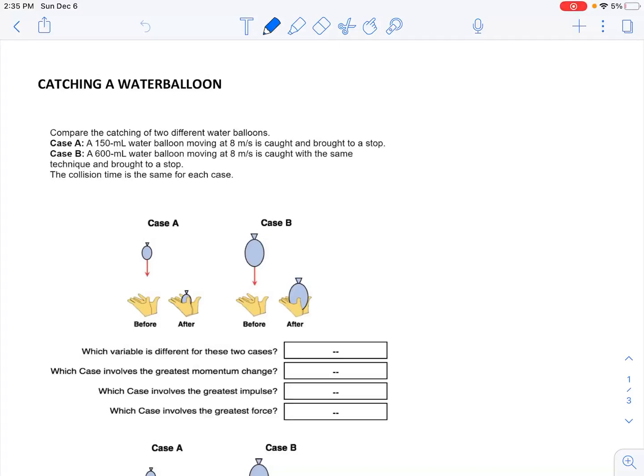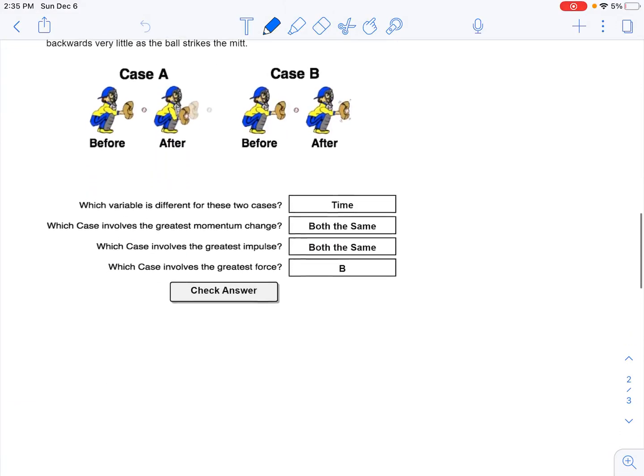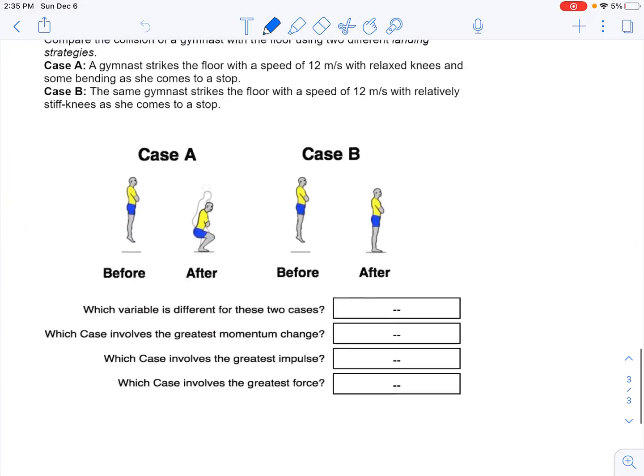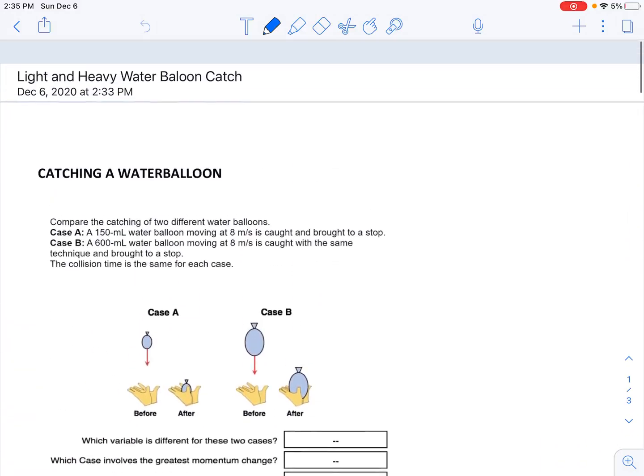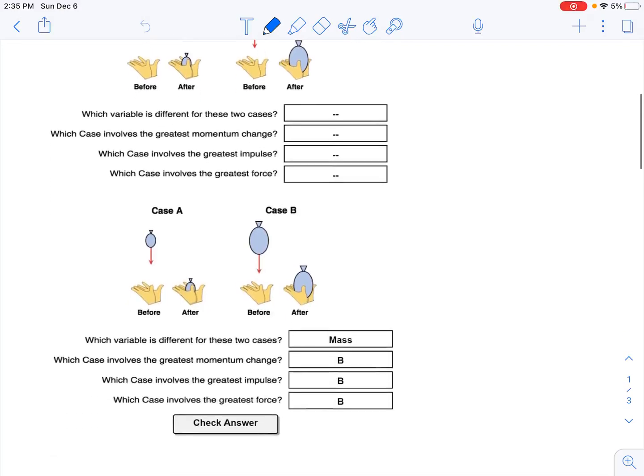All right, so in this concept building you're looking at two objects falling or being caught, jumping—all these require an impulse to either start something or to stop something. So the water balloons here, they compare this way. Which variable is different? Well, I think you can see by the size that one has a much larger mass than the other.